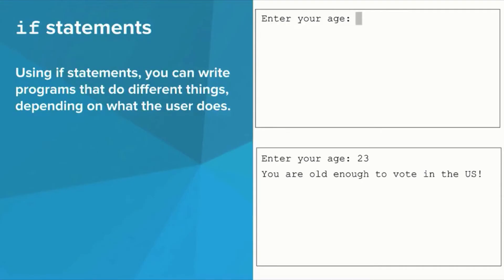In the program demonstrated on the right, the response depends on how the user's age compares to 18, the age at which one is legally allowed to vote in the US. In this case, the user is old enough. And in this case, the user isn't, and the program says so.